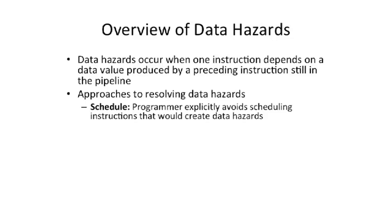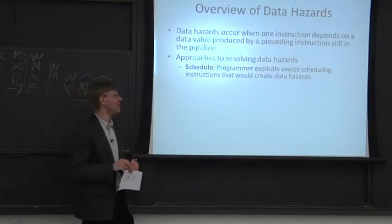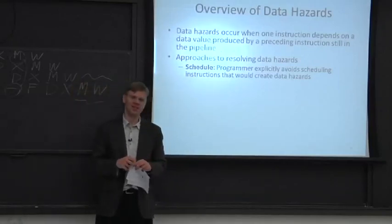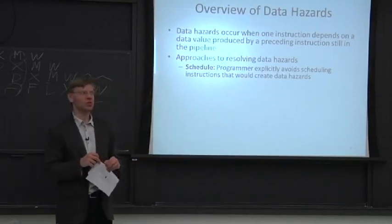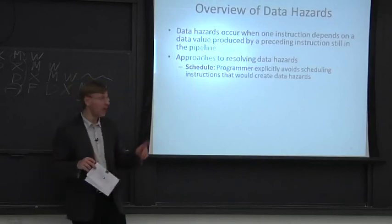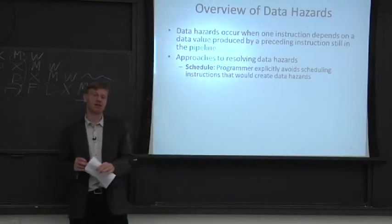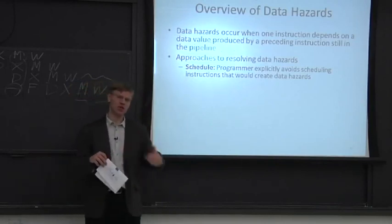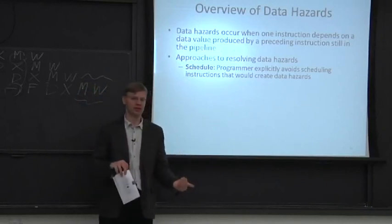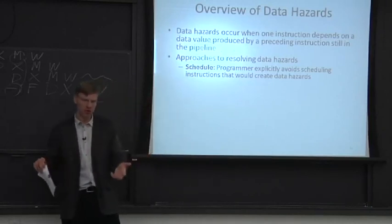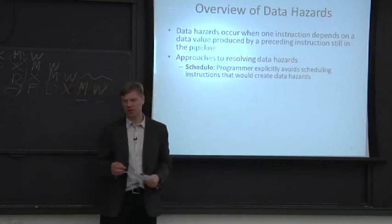This actually showed up in some earlier processors. A famous example is the floating point unit for the Intel I-860, an early RISC architecture made by Intel. In the I-860, the floating point unit was not interlocked, so if you executed a floating point instruction followed by an instruction that uses its result, you might get the wrong value. It was the programmer's responsibility to insert no-ops there.